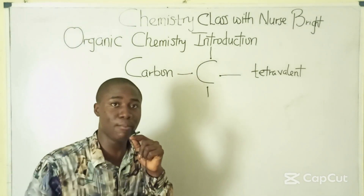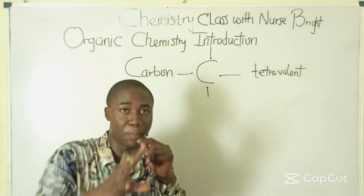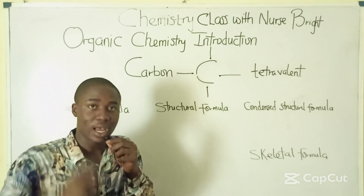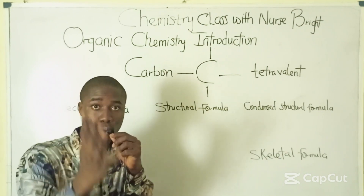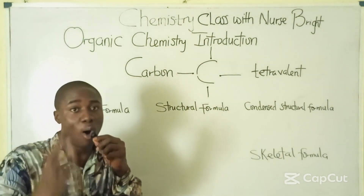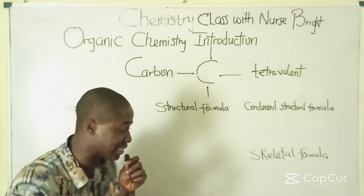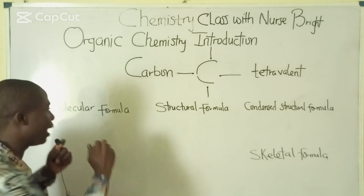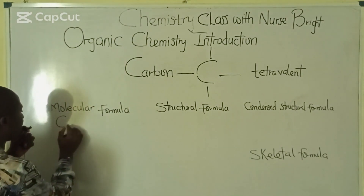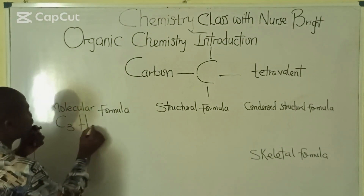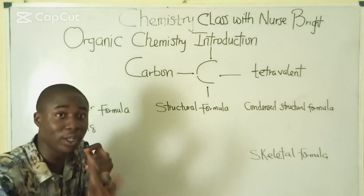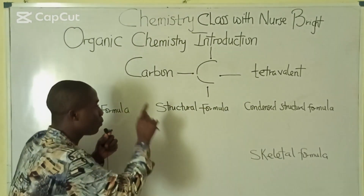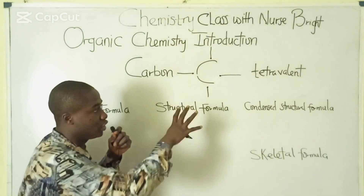With this, let us quickly move over to the ways we can represent an organic molecule. We have four important ways an organic compound or molecule can be expressed. The first way is simply called the molecular formula. Let's take an example using the compound C3H8.